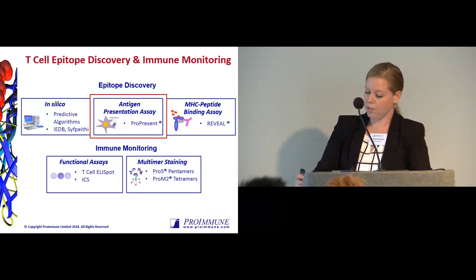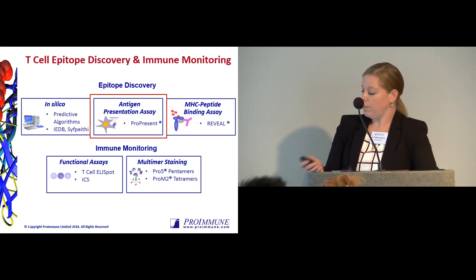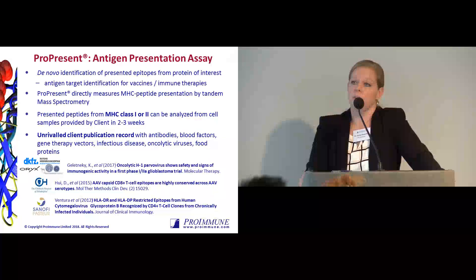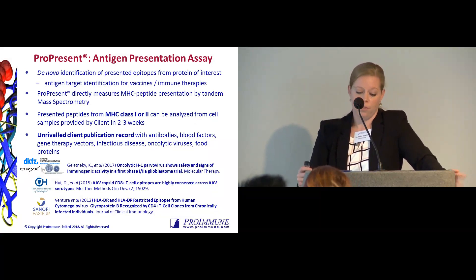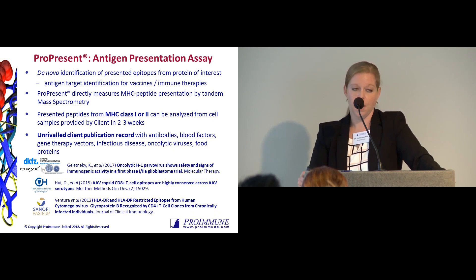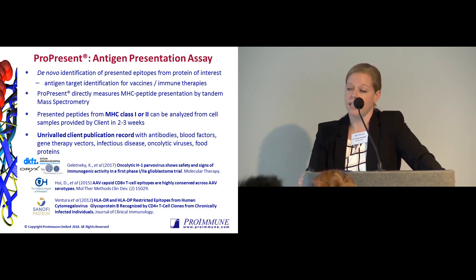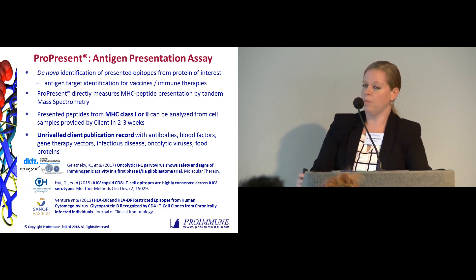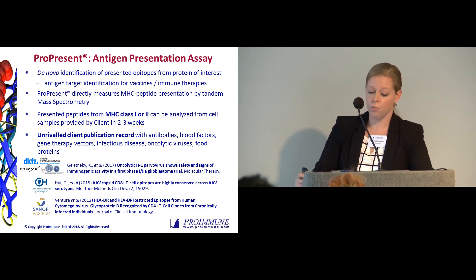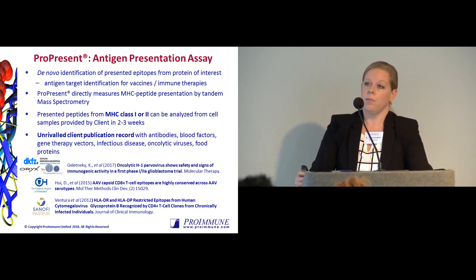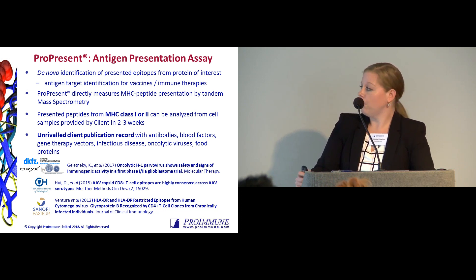I'll begin with the ProPresent Antigen Presentation Assay. It's used to identify naturally processed and presented peptides from your protein of interest in the context of an MHC molecule. This is a very powerful tool that uses mass spectrometry to identify epitopes from both the Class I and Class II processing pathways in just a matter of a few weeks. We'll be focusing on Class I processing today, and you'll hear more about Class II presentation tomorrow from Jeremy in the context of immunogenicity assessment. We have several publications featuring the ProPresent assay, and I'm going to go through a few of these as case studies.